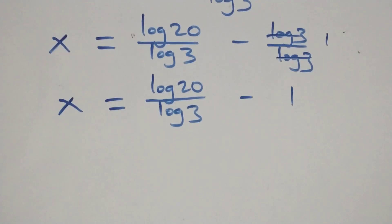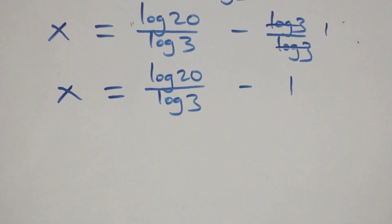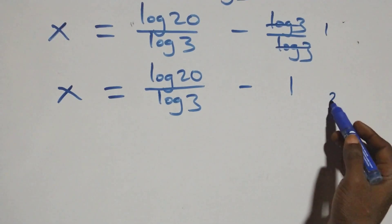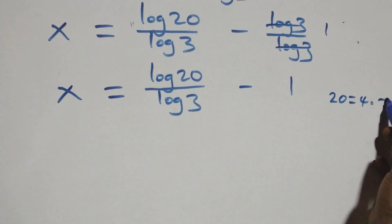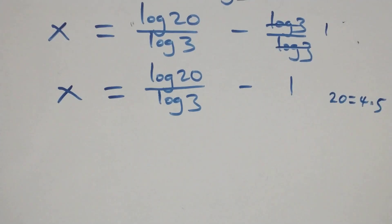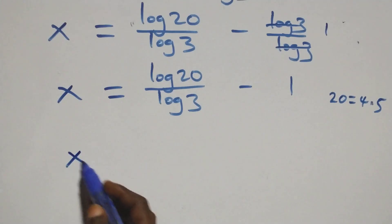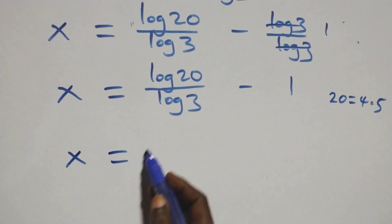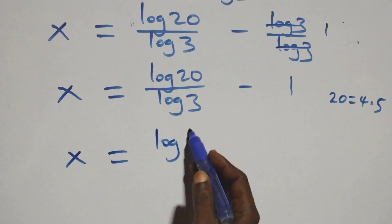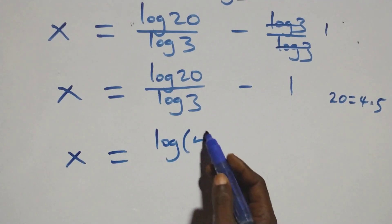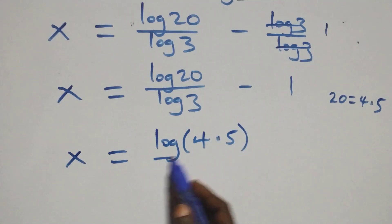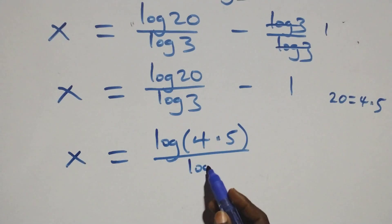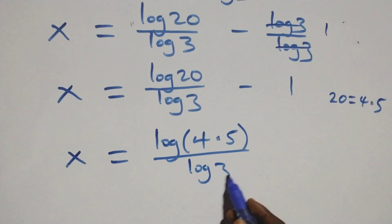Then from what we have here, we can write 20 as 4 times 5. Which implies we have x equals log(4 times 5) over log 3 minus 1.